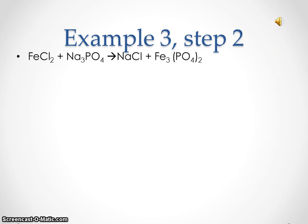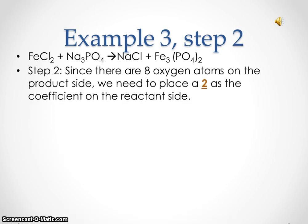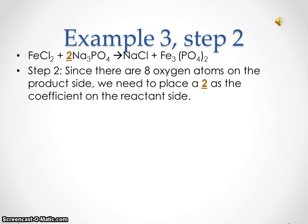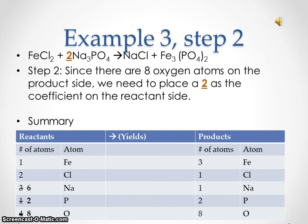Example three, step two. Since there are eight oxygen atoms on the product side, we need to place a coefficient of two on the reactant side. On the reactant side, we now have one iron atom, two chlorine atoms, six sodium atoms, two phosphorus atoms, and eight oxygen atoms. On the product side, we have three iron atoms, one chlorine atom, one sodium atom, two phosphorus atoms, and eight oxygen atoms.